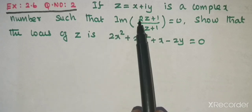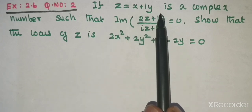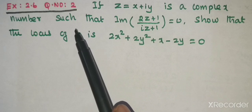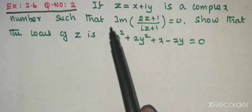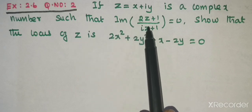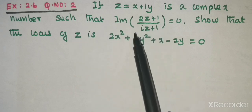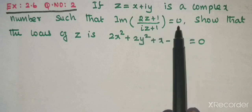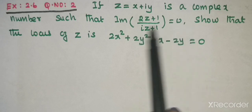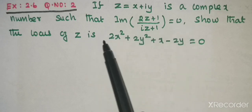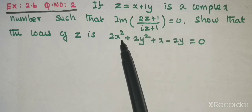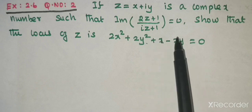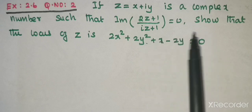If z equal to x plus iy is a complex number such that the imaginary part of 2z plus 1 divided by iz plus 1 equals 0, show that the locus of z is 2x squared plus 2y squared plus x minus 2y equal to 0.